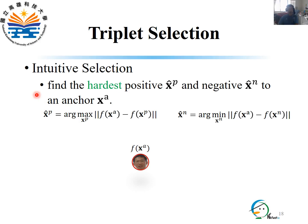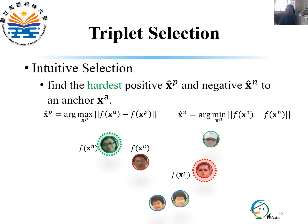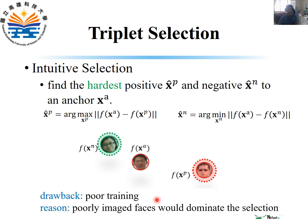The intuitive way to select hard triplets is by finding the hardest positive S_hat_P and the hardest negative S_hat_N for an anchor SA. For an anchor SA, its hardest positive is the one among all positives with the largest distance, and the hardest negative is the one among all negatives with the smallest distance. However, selecting hard triplets in this way leads to poor training because poorly imaged faces will dominate the selection of the hardest positive and negative.